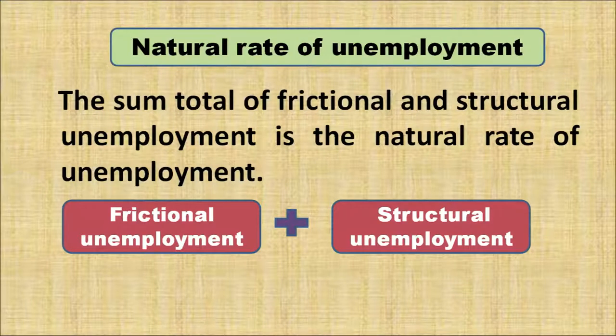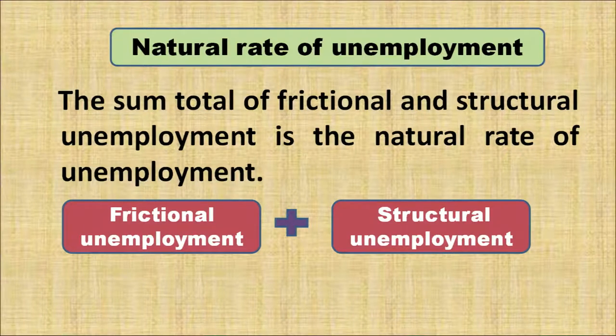The natural rate of unemployment is the normal rate of unemployment in a particular economy. The sum total of frictional and structural unemployment is the natural rate of unemployment — those unemployed because they are between jobs or lack required skills. Cyclical unemployment and seasonal unemployment are not considered normal since they arise only because of the business cycle or seasonal factors, so they are not included in the natural rate of unemployment.